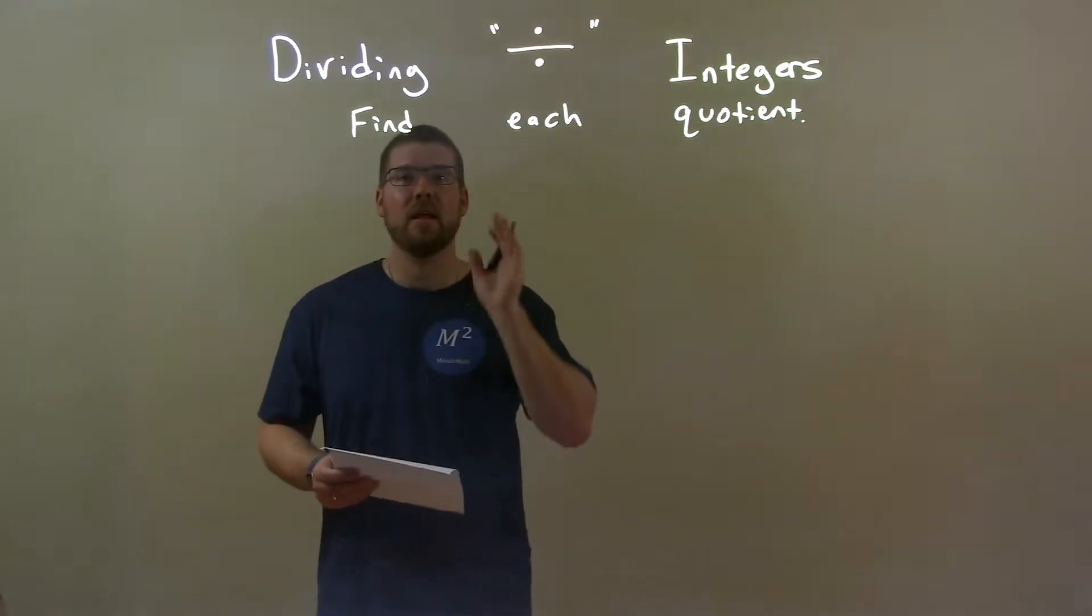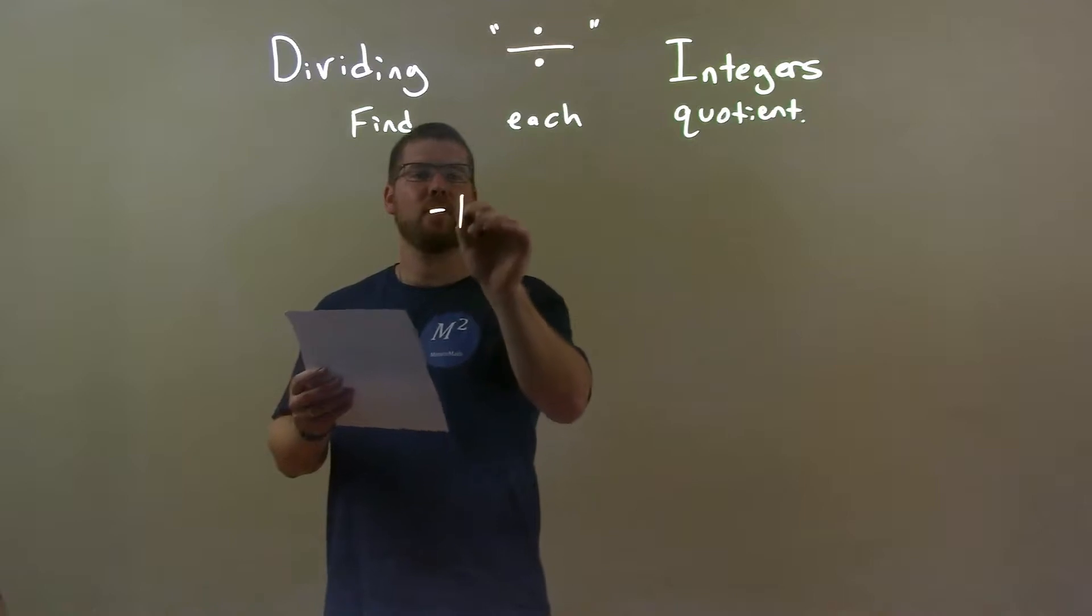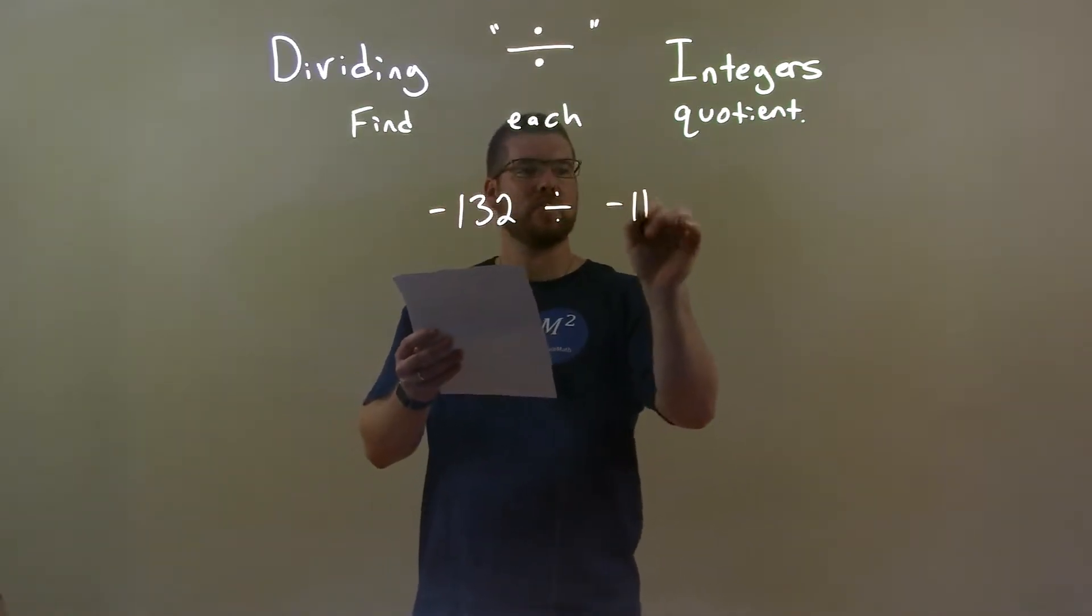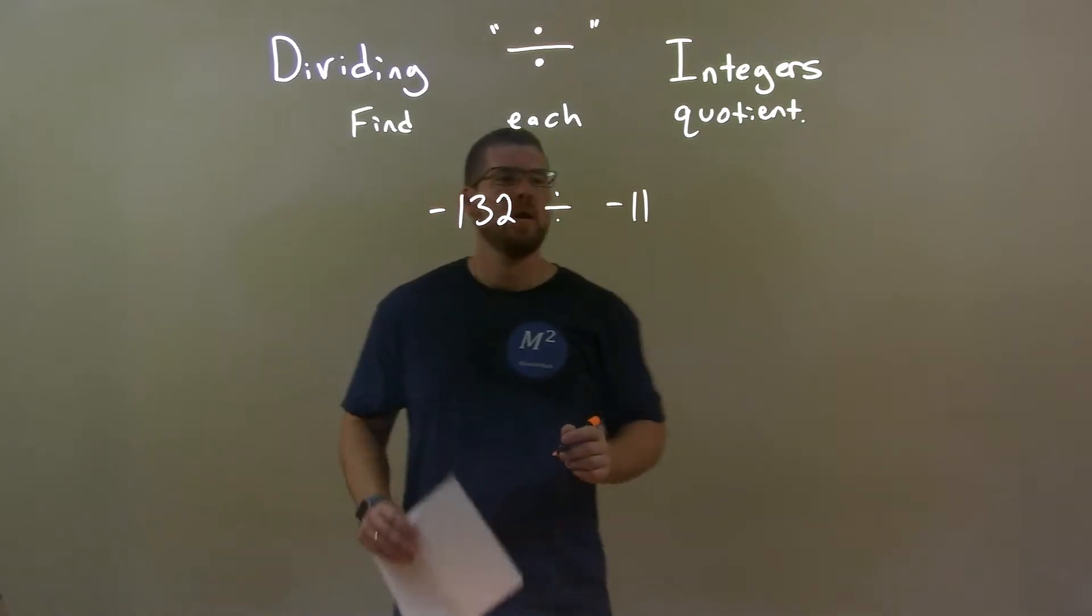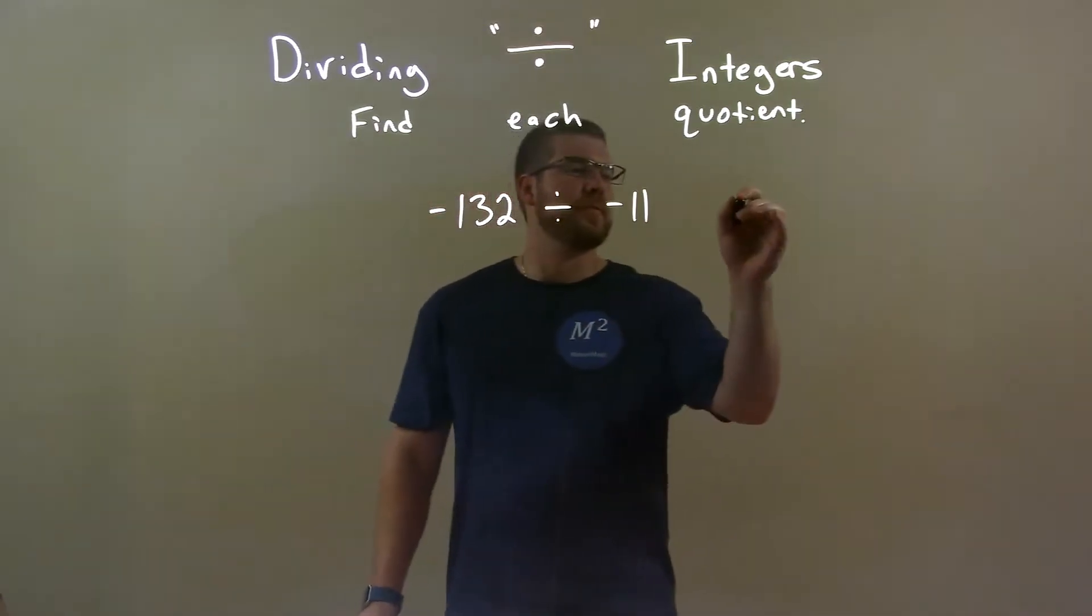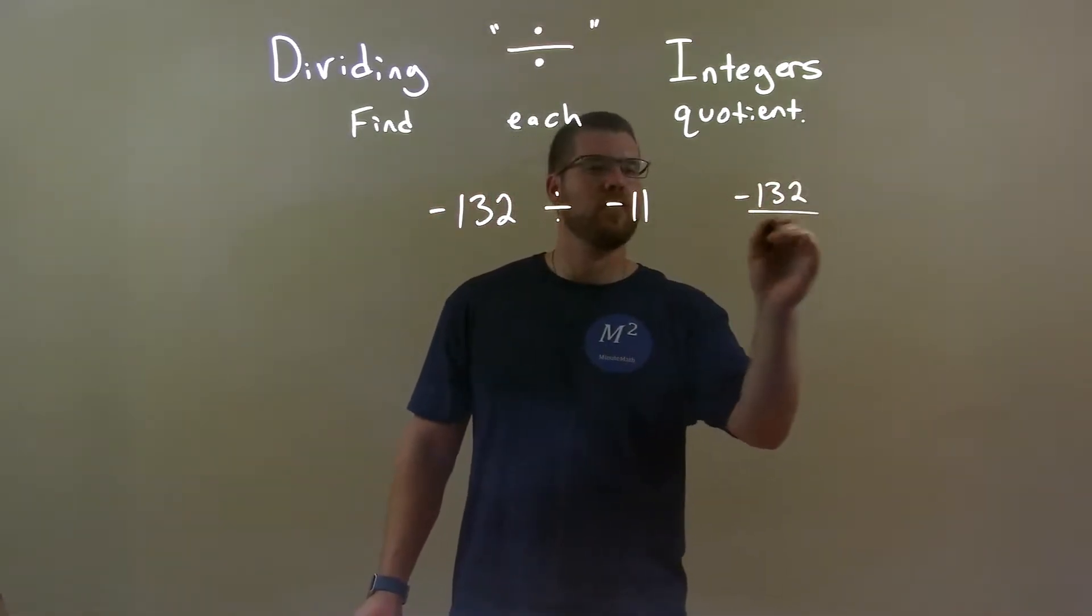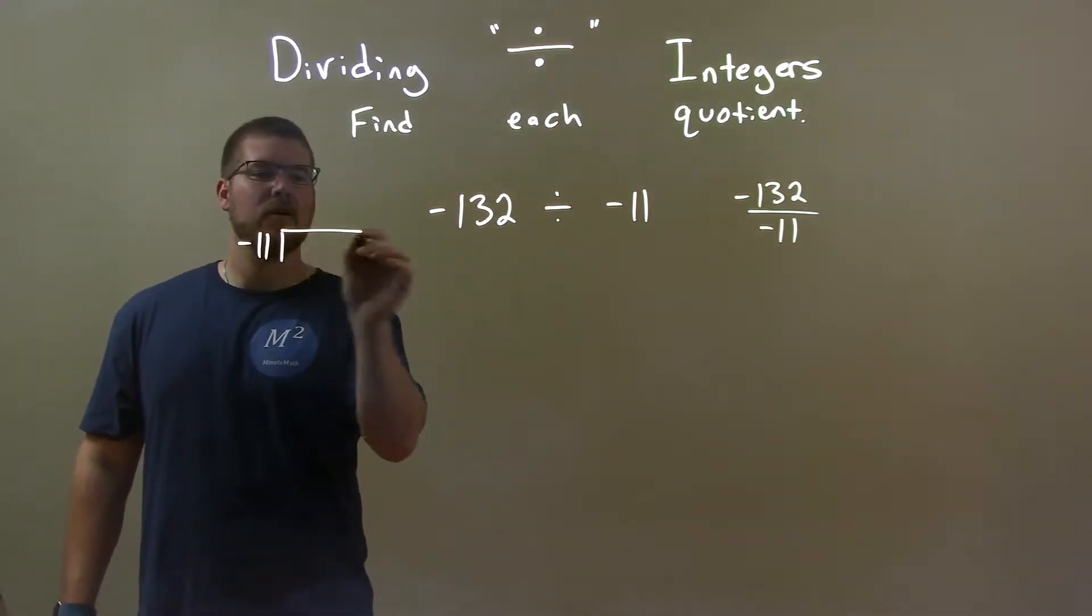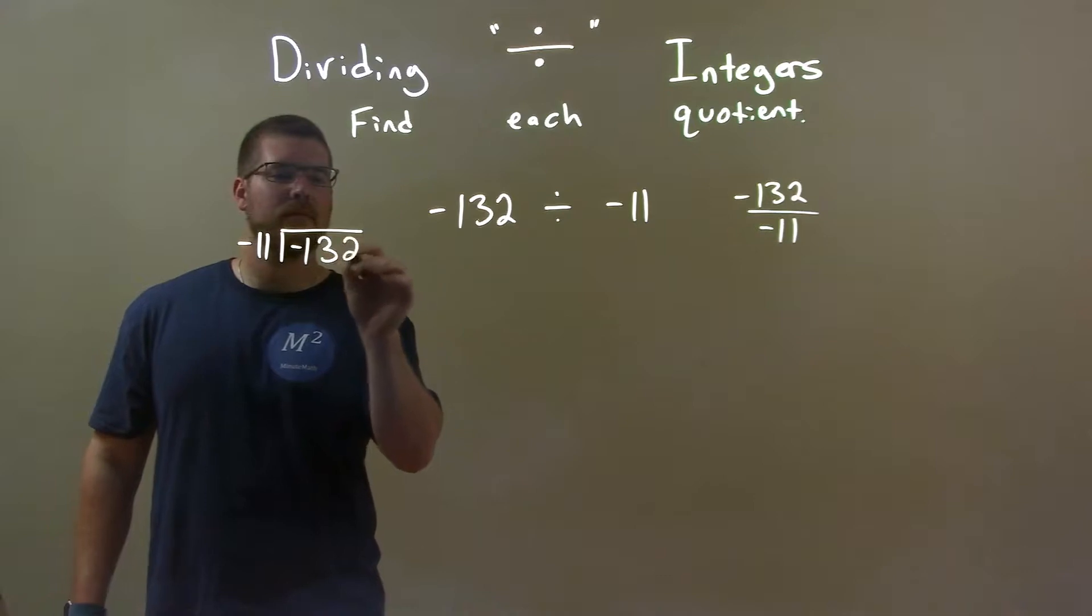If I was given these integers, negative 132 divided by negative 11, well, we might see this as a fraction, negative 132 over negative 11, or in long division, negative 11 goes into negative 132.